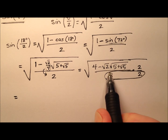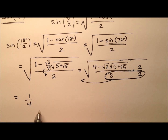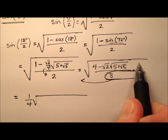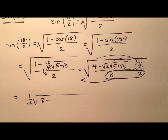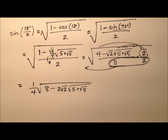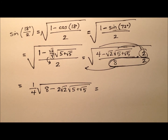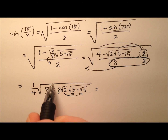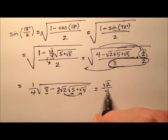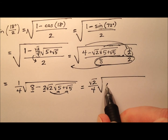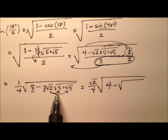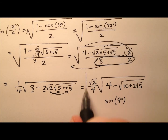8 times 2 will be 16, and 16 is a perfect square, so we take it out and it becomes 1/4 outside of the radical. Inside the radical, this 2 will be distributed, so I'll have 8 minus 2 times the square root of 2 times the square root of 5 plus radical 5. We have a radical inside a radical inside a radical — we can clean this up a bit. Let's take the square root of 2 through this radical, then factor out a square root of 2. It'll look like square root of 2 over 4, and inside the radical: 4 minus the square root of 10 plus 2 times the square root of 5. This is another version for the sine of 9 degrees.